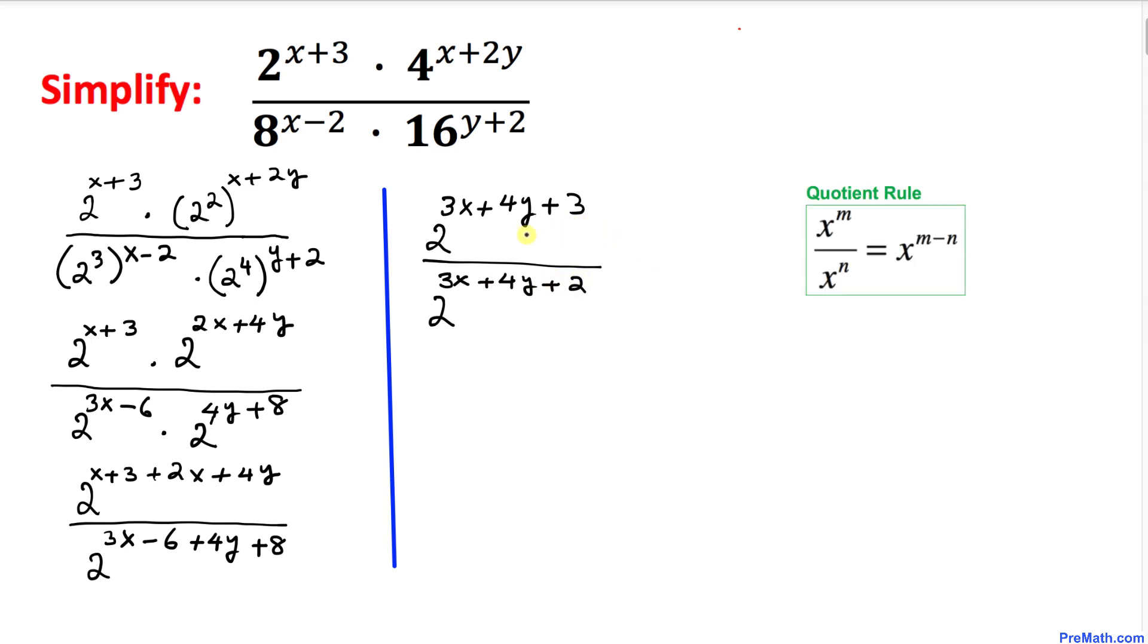Now we'll simplify this fraction using the quotient rule. Since we have the same base, we subtract the exponents. This becomes 2^(3x+4y+3-(3x+4y+2)).